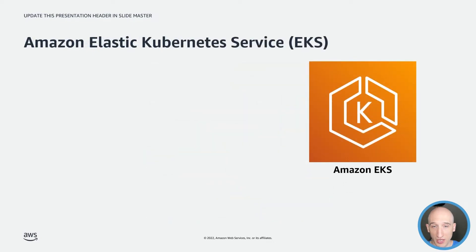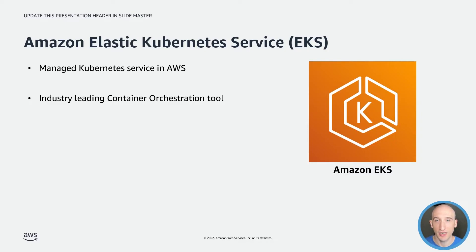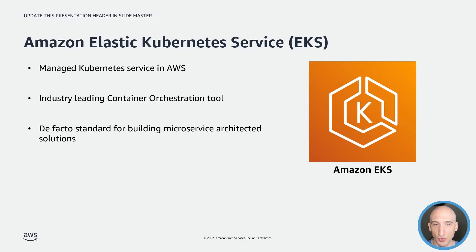If you are already using or aware of Kubernetes-style container deployments, there is Elastic Kubernetes Service, or EKS. EKS is a managed version of Kubernetes that abstracts having to install, operate, and maintain your own Kubernetes control plane or nodes. EKS runs and scales the Kubernetes control plane across multiple AWS availability zones to ensure high availability. It automatically scales control plane instances based on load, detects and replaces unhealthy control plane instances, and provides automated version updates and patching. Kubernetes has been labeled the de facto standard for building microservice-based solutions because of exceptional reliability and fault tolerance clustering.